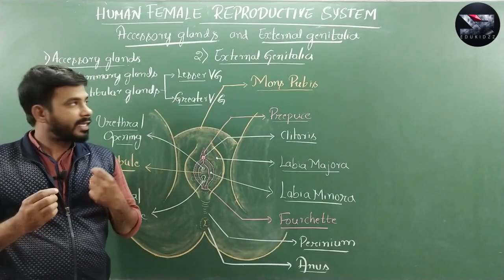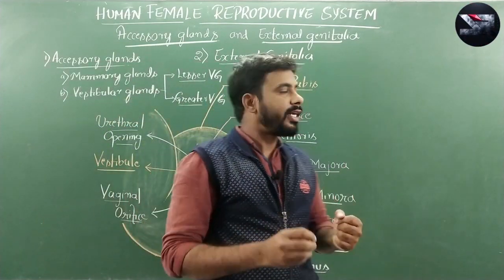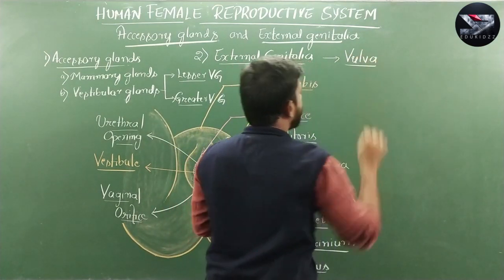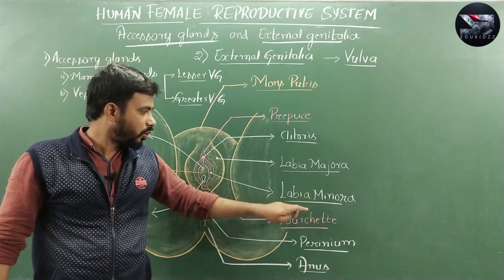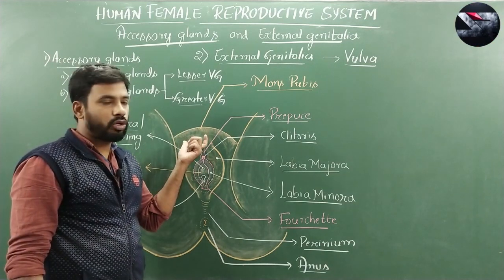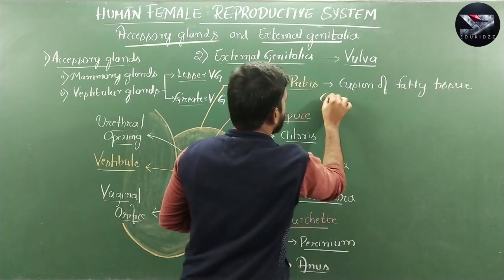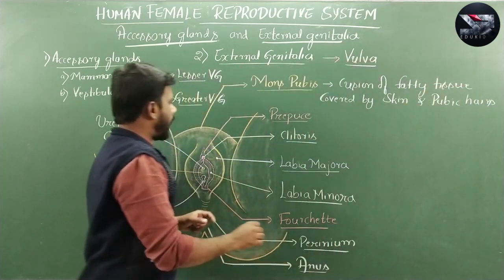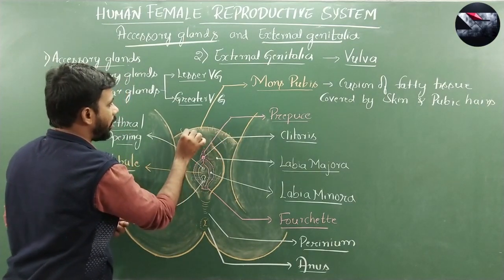The next concept is the external genitalia and vestibular glands. In human females the external genitalia is also called the vulva. It includes various structures: mons pubis, clitoris, labia majora, labia minora, and the vestibular region. The mons pubis is a cushion of fatty tissue covered by skin and pubic hairs.